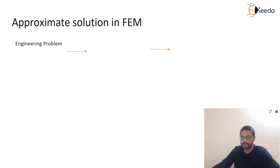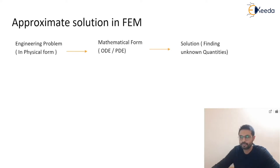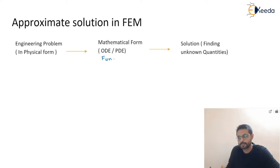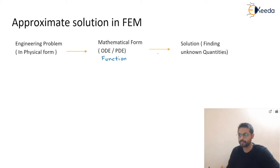Every engineering problem is first in physical form, then it is converted into a mathematical form by an ordinary differential equation or partial differential equation. After that we find the solution by finding out the unknown quantities. We convert this ODE or PDE into some function, apply boundary conditions, and get the exact solution.